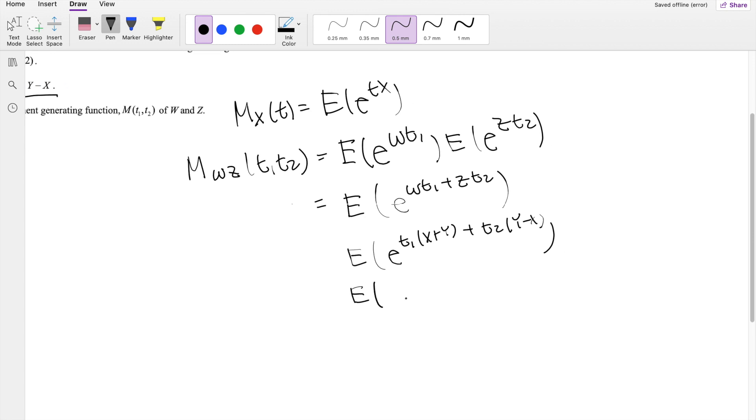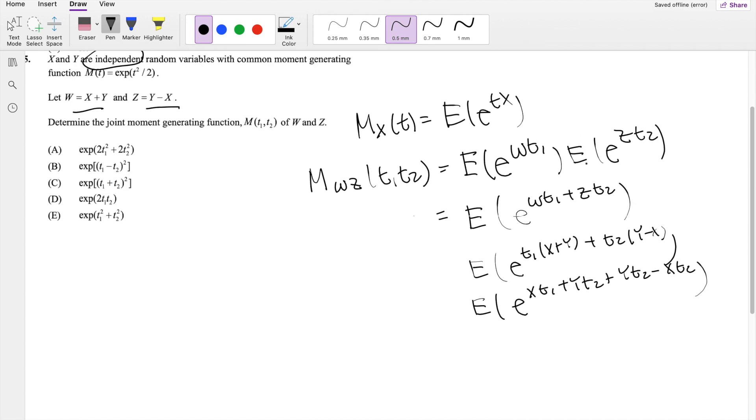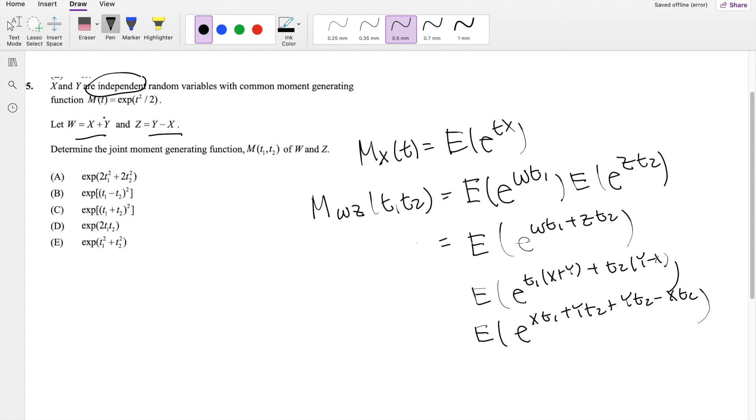Okay, and then so basically from here, the problem is just about simplifying. And can you simplify correctly? Okay, so distributing those here, you get XT1 plus YT1 plus YT2 minus XT2.